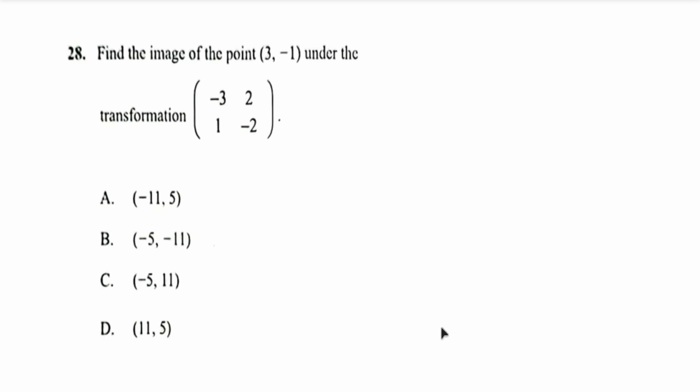Question 28 says that: find the image of the point (3, -1) under the transformation of the matrix with entries negative 3, 2, 1, negative 2.